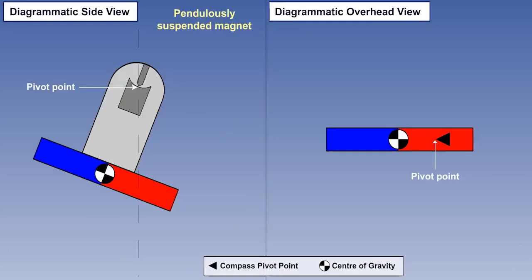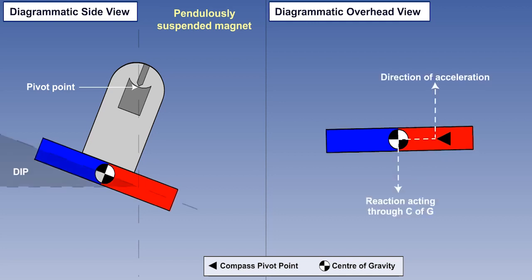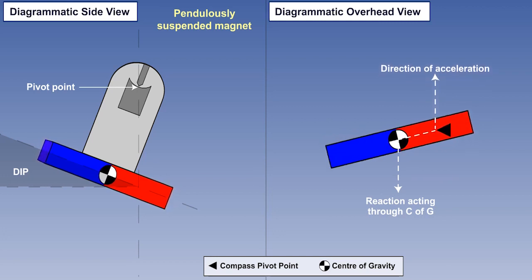Let's look at turning errors now. Apart from the small error caused by liquid swirl, a turning error is an acceleration error, as any turn is effectively an acceleration in the direction of the turn. The basic theory is therefore the same as that for linear acceleration errors. Remember that acceleration errors occur where there is significant magnetic dip.